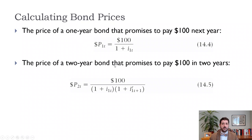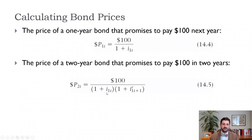What about the price of a two-year bond that promises to pay $100 in two years? Now we have to discount that by not only the interest rate we would get in the first year, but also the expected interest rate we would get in the second year. The notation is a little confusing: T is this year and T+1 is next year. The '1' in front is the one-year interest rate, as opposed to a two-year or three-year interest rate. So we're comparing the one-year interest rate this year and the expected one-year interest rate next year to calculate the price of a two-year bond — discounting off the $100 face value to give us the current price.